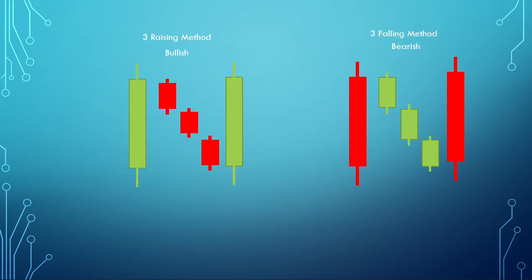The Three Rising Method is a bullish continuation or reversal pattern. It's made up of a large bullish candle followed by three bearish candles contained within the range of the prior bullish bar. The pattern is completed by a large-range bullish bar that closes at or above the high of the prior bullish bar. On the flip side, the bearish pattern is made up of two large bearish candles encompassing three small-bodied bullish bars.